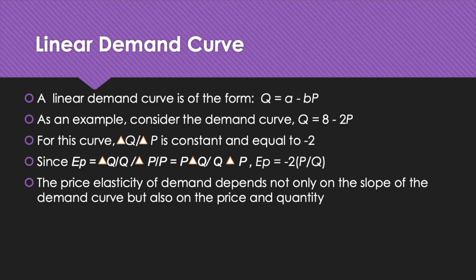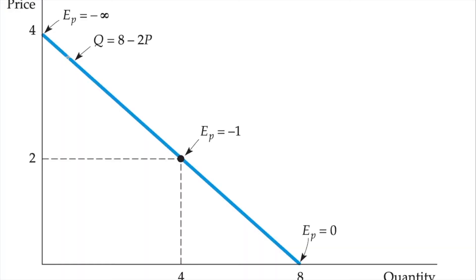Here ΔQ/ΔP is −2, and the formula for elasticity of demand is (ΔQ/ΔP) × (P/Q), so E = −2 × (P/Q). The figure represents a linear demand curve Q = 8 − 2P. When the price is 0, quantity demanded is 8; when the price is 2, quantity demanded is 4; and when the price is 4, quantity demanded is 0.